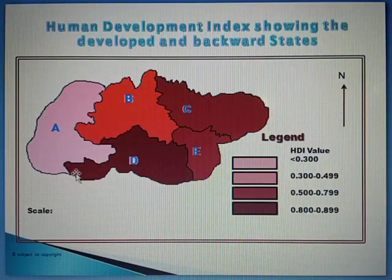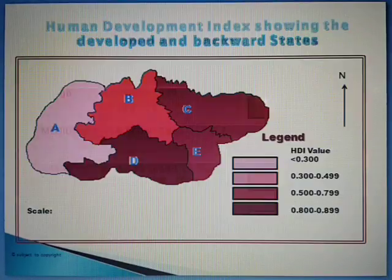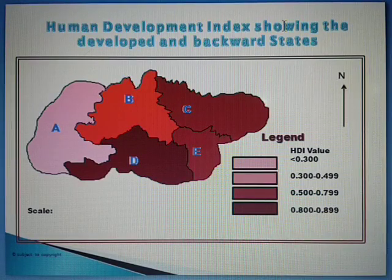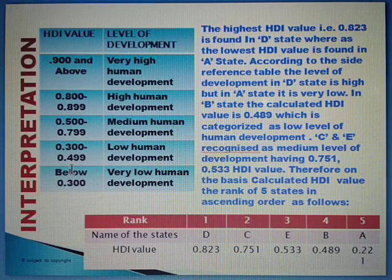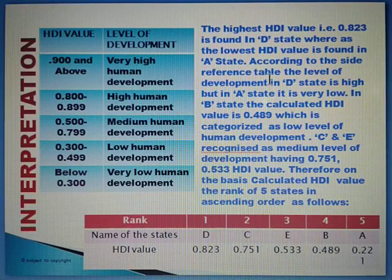In this way, four zones are created and assigned different choropleth shades. These shades are applied to a given map — the outer boundary of the map will be provided at the time of examination. Apply the shadings to prepare the choropleth map using the Human Development Index. Write the headings, legend, scale, and related details on the map.